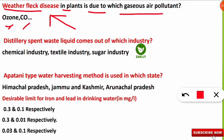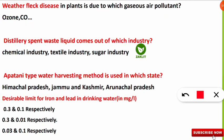The second question was: distillery spent waste liquid comes out of which of the following industries? The key lies in understanding the concept. Distillery comes from the word distillation. Distillation is done in the sugarcane industry where we get sugar, so the correct option is the sugar industry — that is where distillery spent waste liquid comes out.